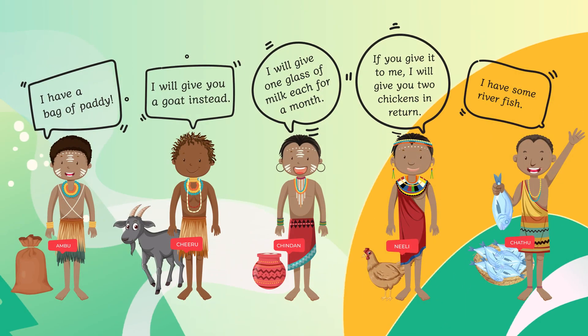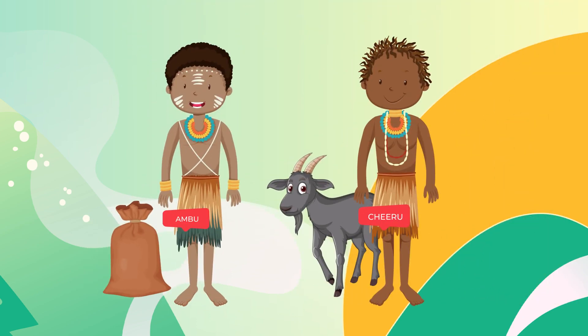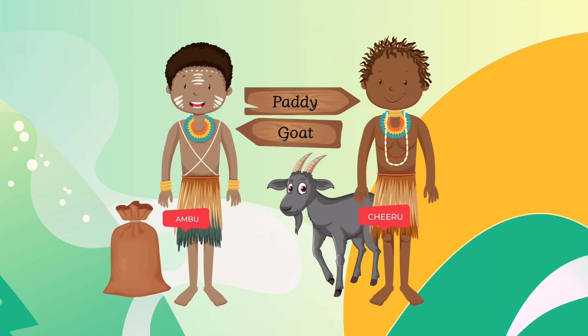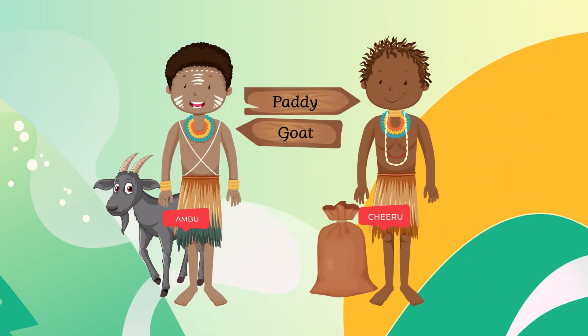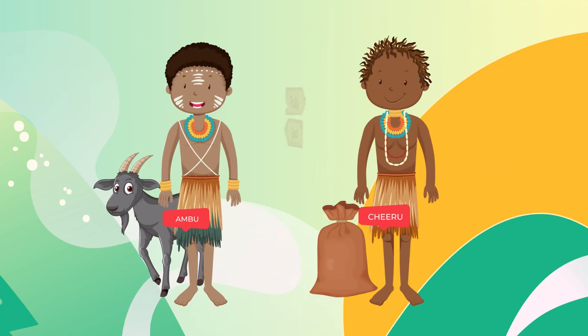Long ago, when humans began to farm and keep animals, they did not use money as we do today. Instead, they traded goods or services with each other. This is known as the barter system.